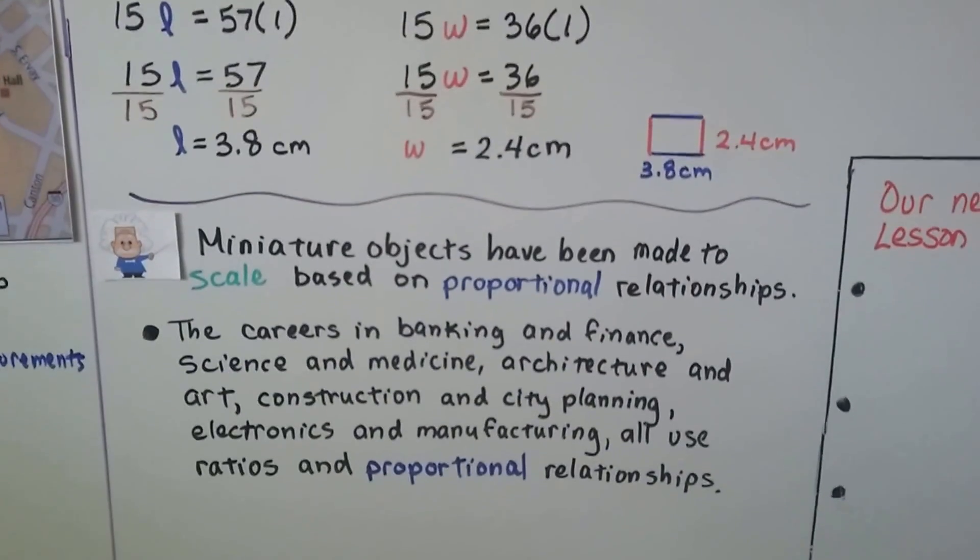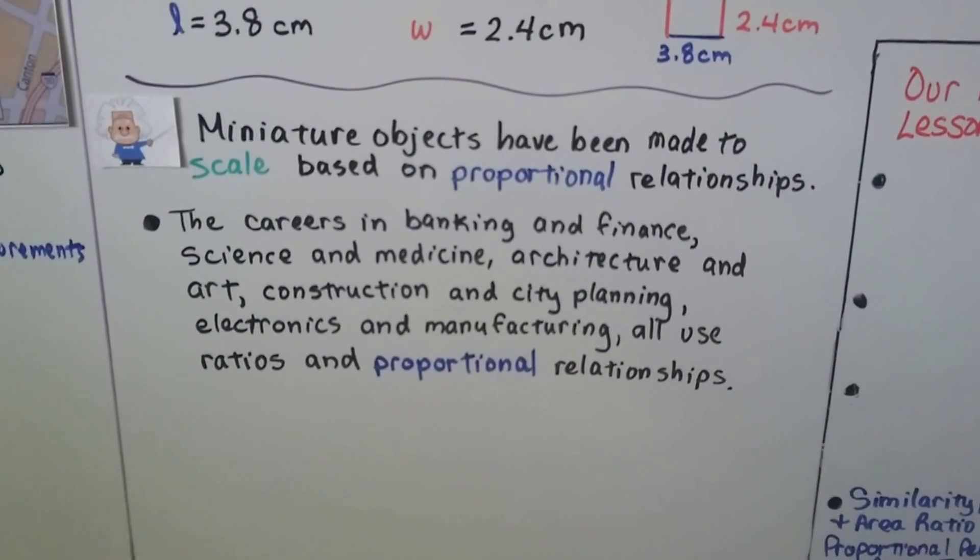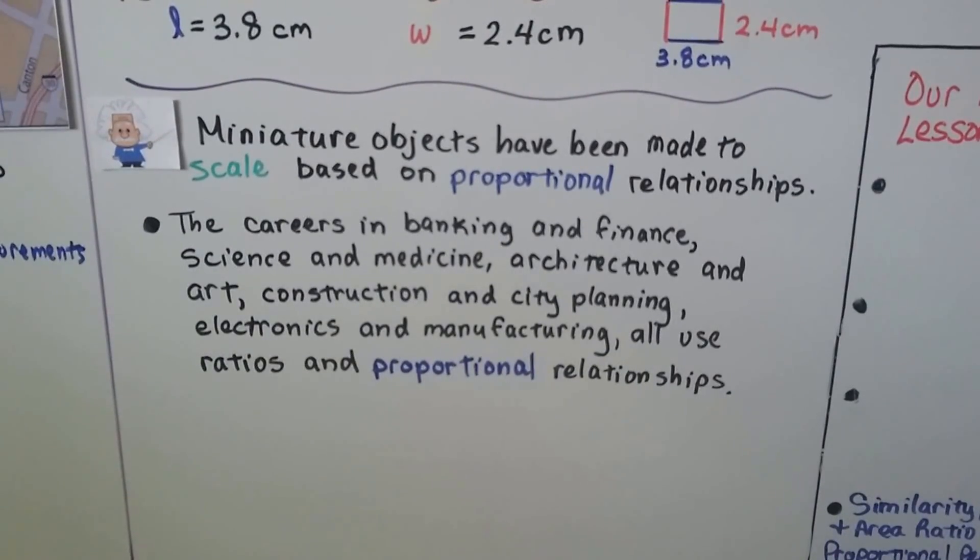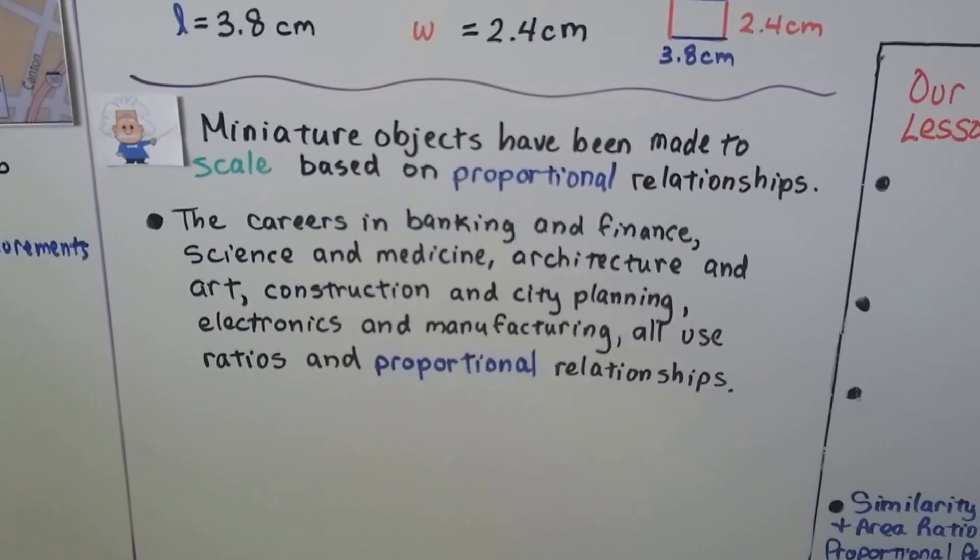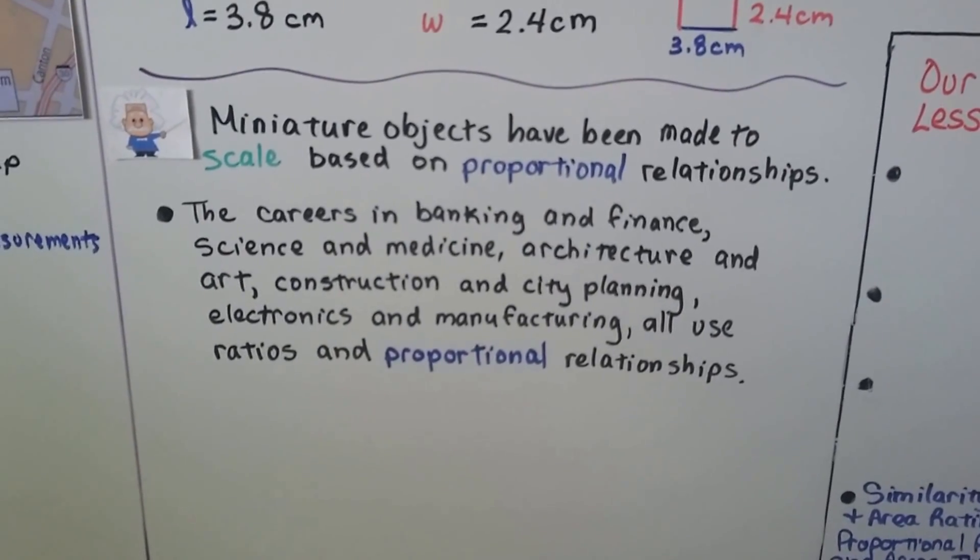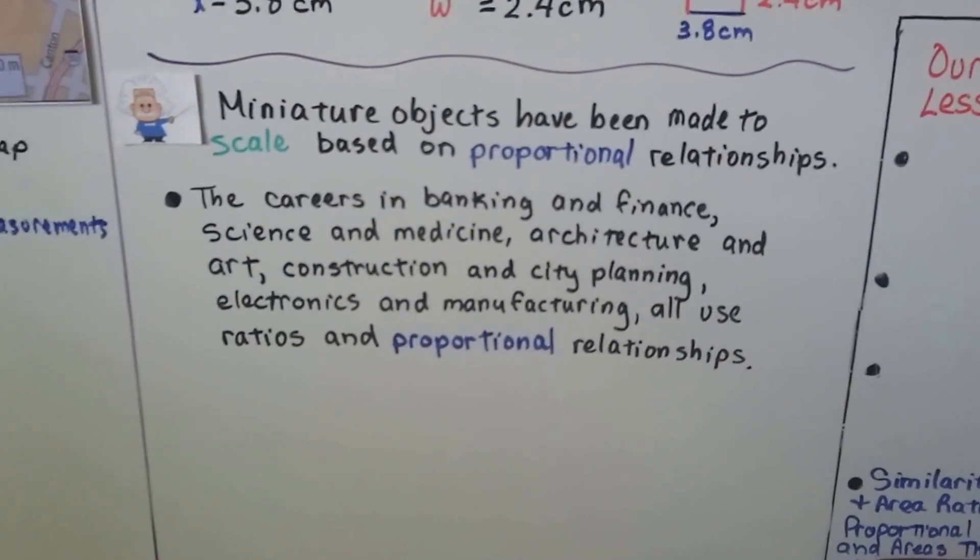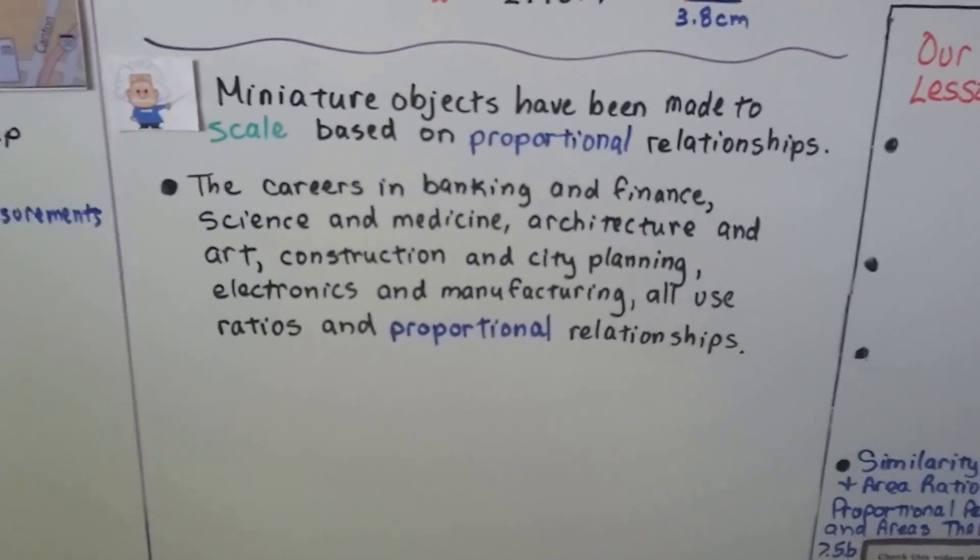Miniature objects have been made to scale based on proportional relationships. The careers in banking and finance, science and medicine, architecture and art, construction and city planning, electronics and manufacturing, they all use ratios and proportional relationships and a lot of other jobs too. So you can't get away from ratios and proportions. You gotta know.